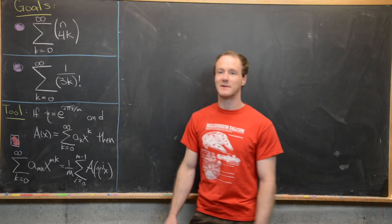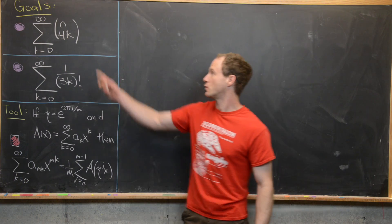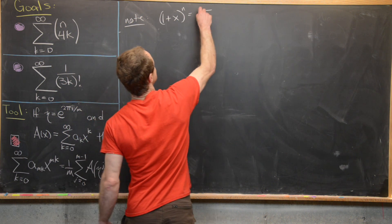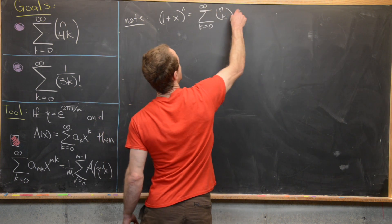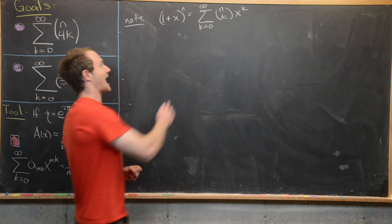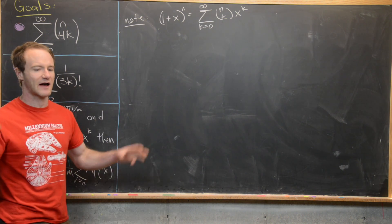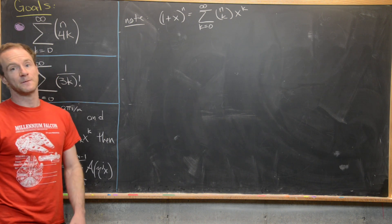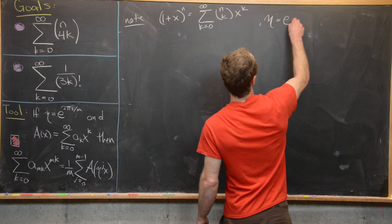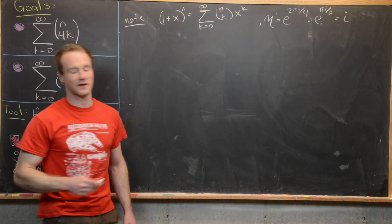Now let's tackle our first goal: the sum as k goes from 0 to infinity of n choose 4k. We need a generating function for this binomial coefficient. We use the well-known binomial expansion: (1+x)^n equals the sum k from 0 to infinity of n choose k times x^k, taking n to be a natural number. Since we have a 4, our m equals 4, so η equals e^(2πi/4) = e^(iπ/2), which by Euler's formula equals i.